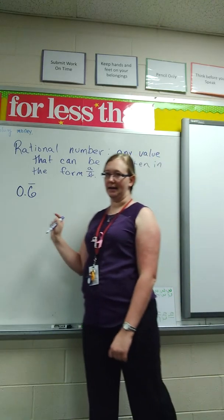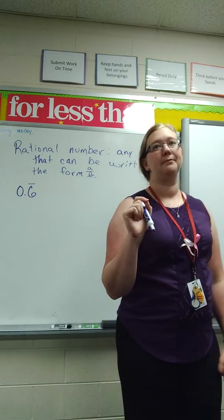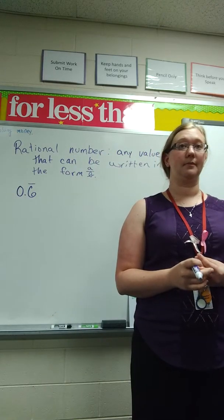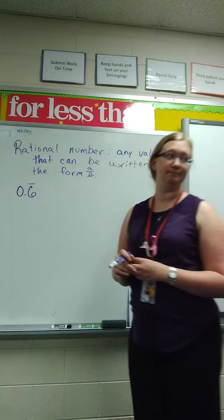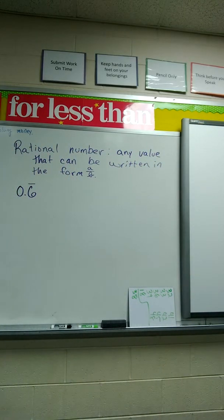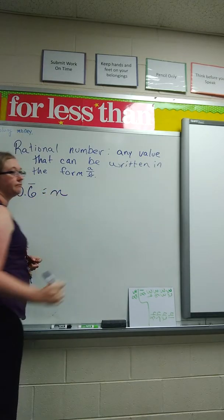If I didn't do that, then I would be rounding. And we don't want a rounded fraction. We need an exact fraction. So this is what we're going to do. We are going to have our repeating decimal represent a variable. We need to use variable n. Okay?